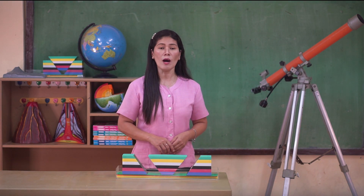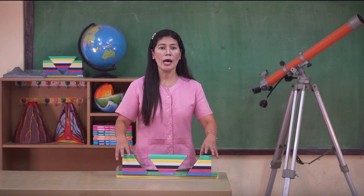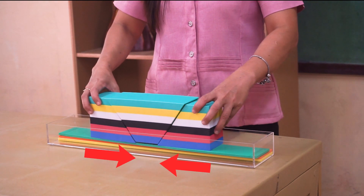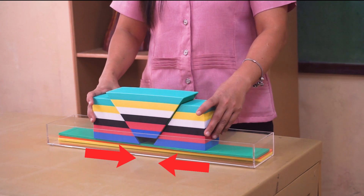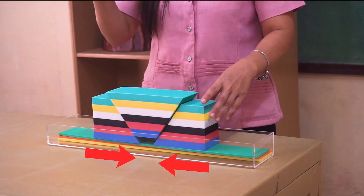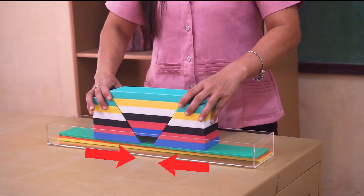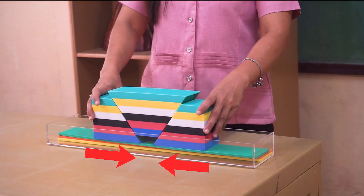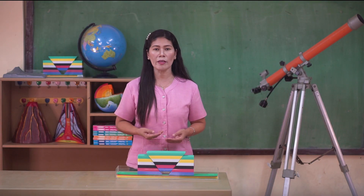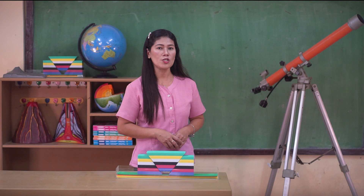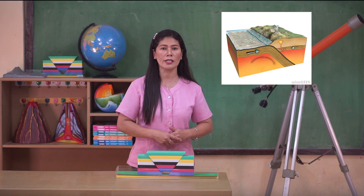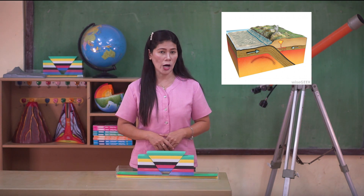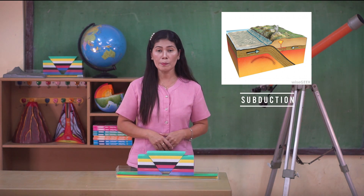When the two plates of a convergent boundary move towards each other, the impact of the colliding plates can cause the edges of one or both plates to buckle up into mountains or mountain ranges, or one of the plates may bend down into a deep seafloor trench. This happens when the denser oceanic crust descends below the edge of the continental crust. This process is called subduction.